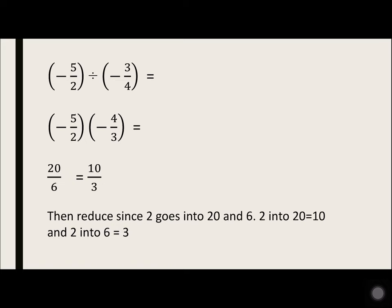Negative 5 over 2 divided by negative 3 over 4. So we're dividing. The first fraction stays the same, the second fraction flips. So 3 over 4 changes to 4 over 3. The signs don't change—the signs of the number, the negative, that doesn't change.